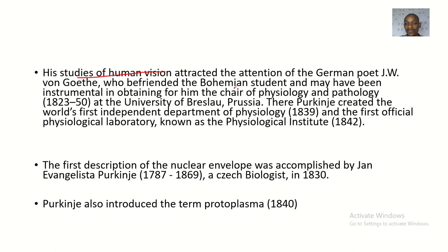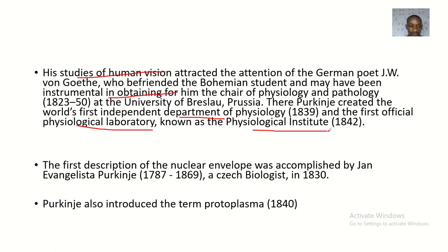His studies of human vision attracted the attention of German poet J.W. von Goethe, who befriended the Bohemian scientist and may have been instrumental in obtaining him the chair of physiology and pathology at the University of Breslau, Prussia. Purkinje created the world's first independent department of physiology in 1839 and the first official physiological laboratory, known as the Physiological Institution, in 1842.